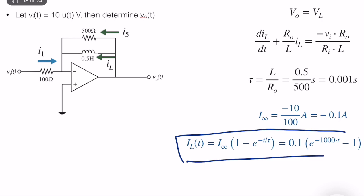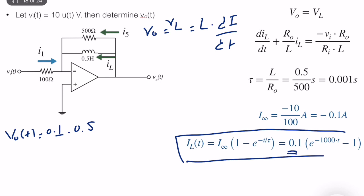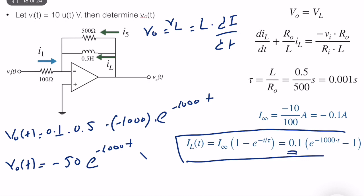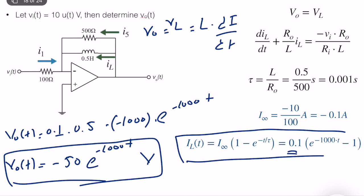Now, looking at the expression and confirming it is correct, we need to compute V_0, the output voltage. Since V_0 equals V_L equals L·(dIL/dt), we take the derivative of IL(t) and multiply by L = 0.5. The derivative of the exponential term gives minus 1000. So V_0(t) equals 0.5 times 0.1 times minus 1000 times e^(minus 1000·t), which simplifies to minus 50·e^(minus 1000·t) volts.